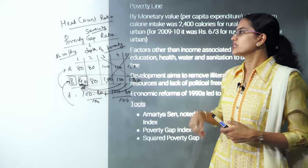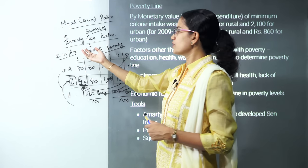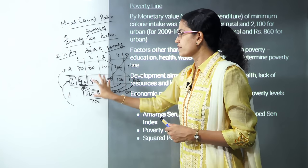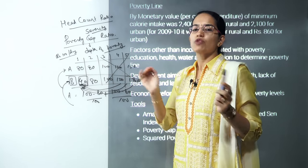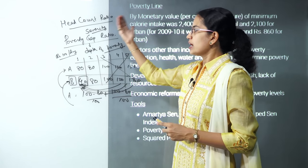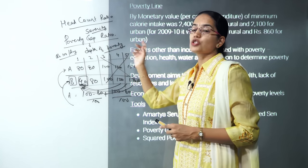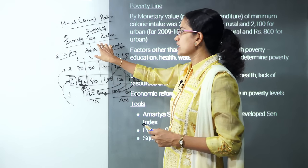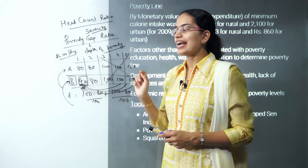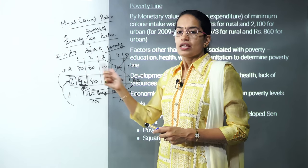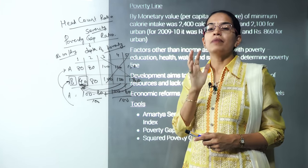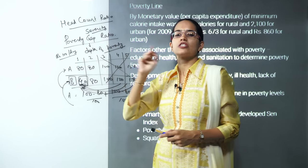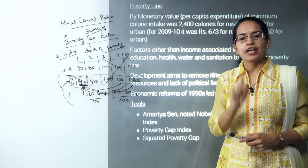The squared poverty gap ratio takes the same poverty gap weights, squares them, and sums them together. Because it uses squares, it measures intensity in a more severe way and is therefore also known as the severity index.